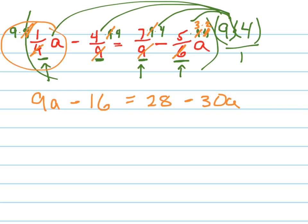Now I'm going to move all the a's to the left. And I'm going to move all of the numbers, the constants, to the right. So add 30 to both sides. So that would be 39a equals. Now add 16 to both sides. And you're going to get 44.